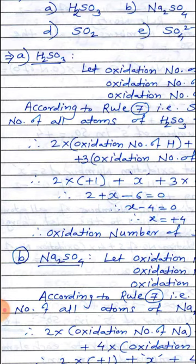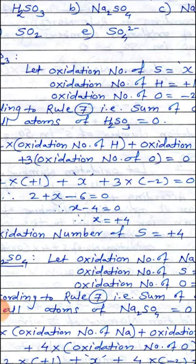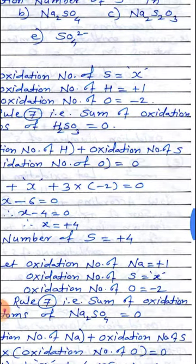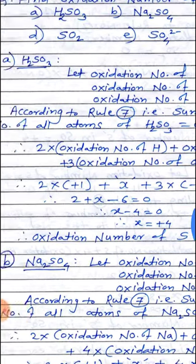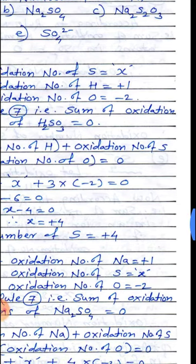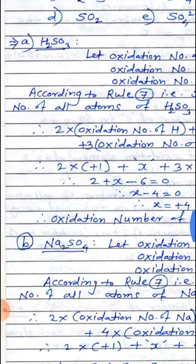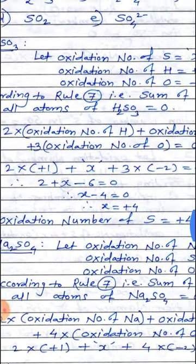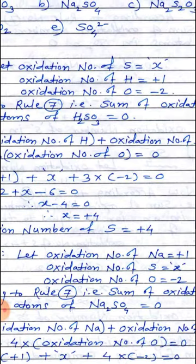We have seen the rules in the last lecture. According to rule number 7, the algebraic sum of the oxidation numbers of all the atoms present in a neutral molecule is equal to 0. So, the sum of oxidation numbers of all atoms in H₂SO₃ equals 0.